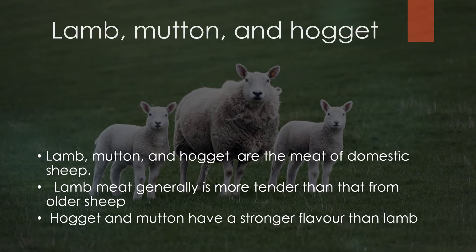Lamb, mutton and hogget — they are nothing but the varieties obtained from sheep. The meat of a sheep in its first year is known as lamb. That of a juvenile sheep older than one year is hogget. And the meat of an adult sheep or a goat is called mutton. The meat of a lamb is taken from the animal between one month to one year old, with a carcass weighing between 5.5 to 30 kg.